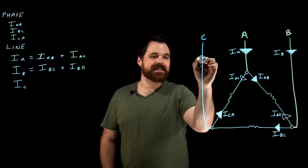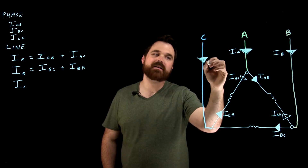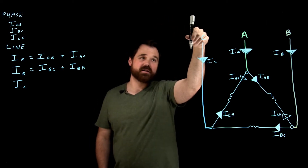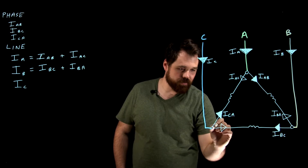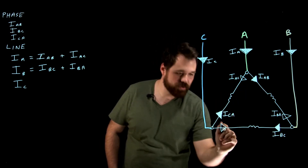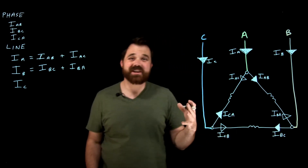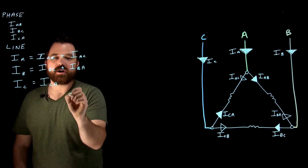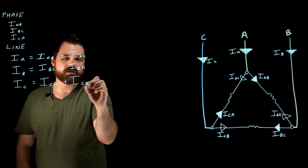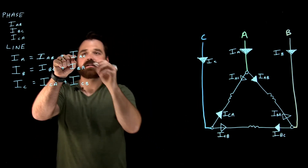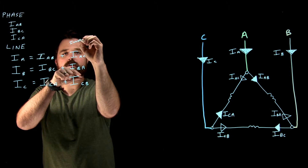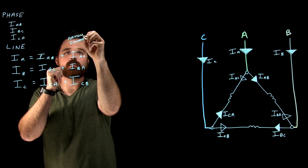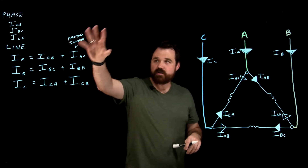Then we come to line C current, I_C. When line C is in its positive alternation, it comes down into the node, and we end up adding I_CA, which we know already, plus I_CB, which is just the 180 degree inverse of I_BC. So I_C equals I_CA plus I_CB. Keep in mind, these three — I_AC, I_BA, and I_CB — are all the inverse, or what we call the phantom phasors, or phantom currents.